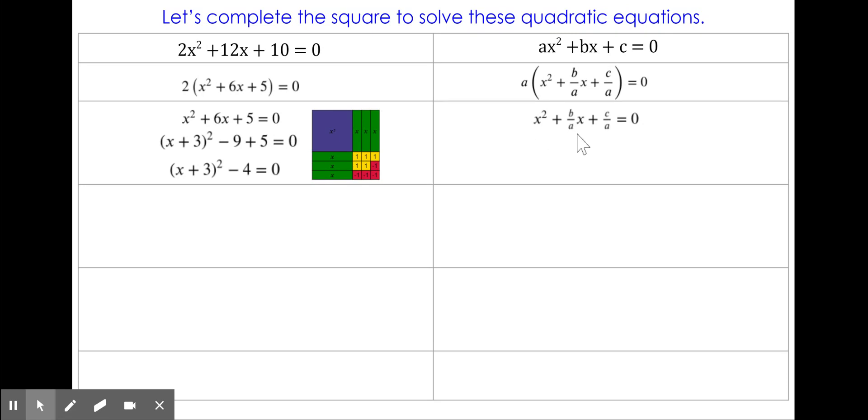We're now going to do the same thing on the right. We know we have to take plus b over a and divide it by 2 to get our perfect square, just like we divided 6 by 2. I divide that by 2, and so I have b divided by 2a. But just like we subtracted 9, I need to subtract b divided by 2a squared. We still have our plus c over a.